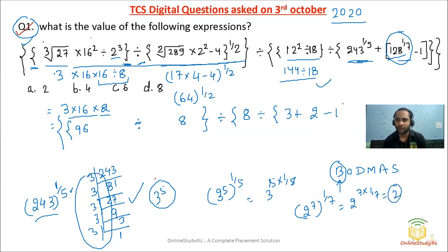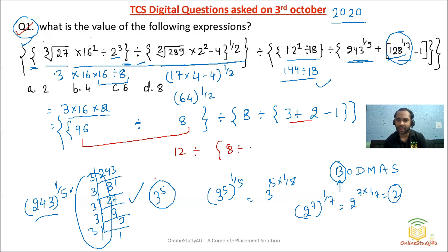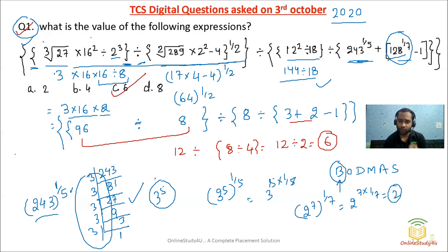I wanted to show the working rather than just writing the answer, to build your confidence. So dividing 96 by 8 gives 12. Then 8 divided by (3 + 2) = 5, and 5 minus 1 = 4. So 12 divided by 4 gives 3, and 12 divided by 2 gives 6. The answer is option C.